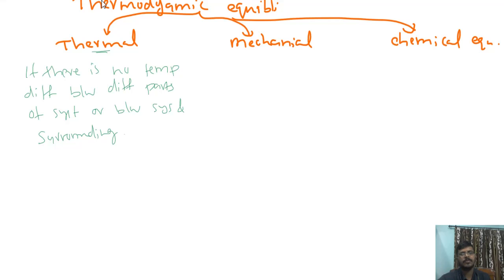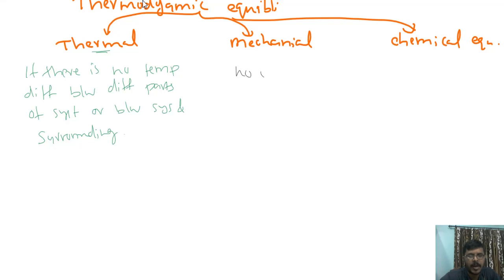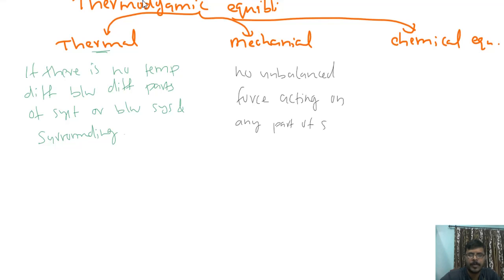The second is mechanical equilibrium. A system is in mechanical equilibrium if there is no unbalanced force acting on any part of the system, or on the system as a whole.